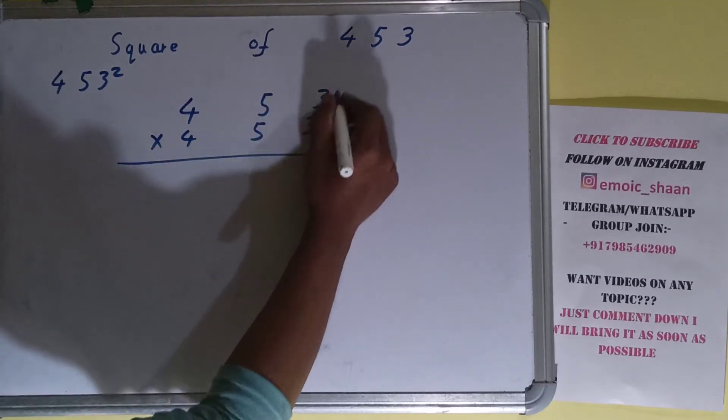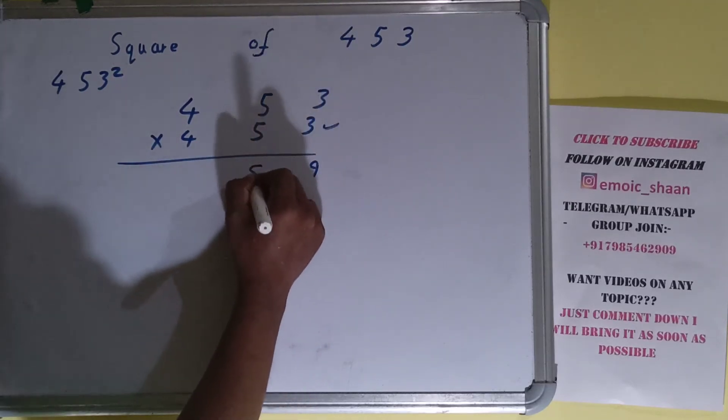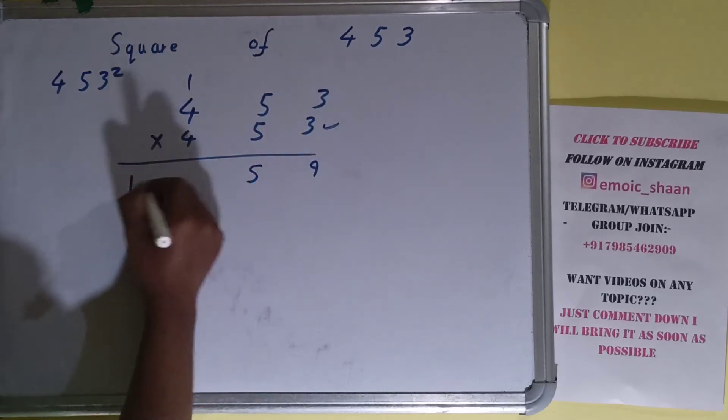So let's begin with this. Three times three is nine. Five times three is fifteen, one carry. And three times four is twelve, plus one is thirteen.